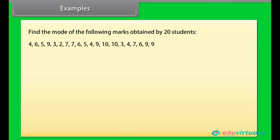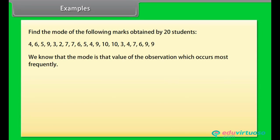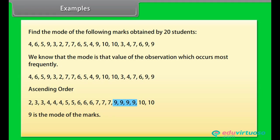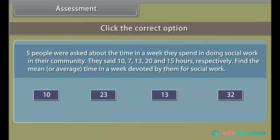Example: Find the mode of the following marks out of 10 obtained by 20 students. We know that the mode is that value of the observation which occurs most frequently. Arranging the marks in ascending order, we can see that 9 is occurring most frequently, so 9 is the mode of the marks.